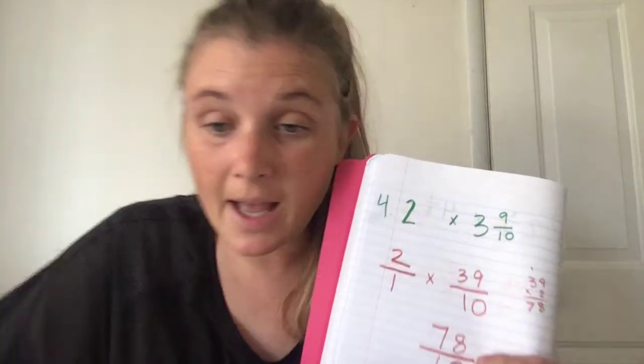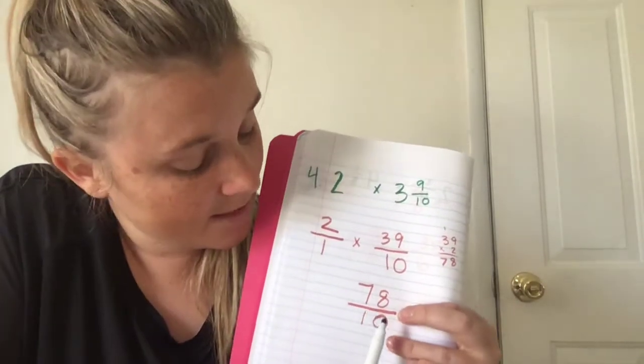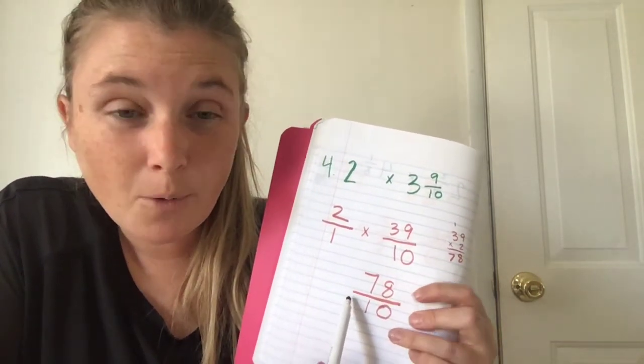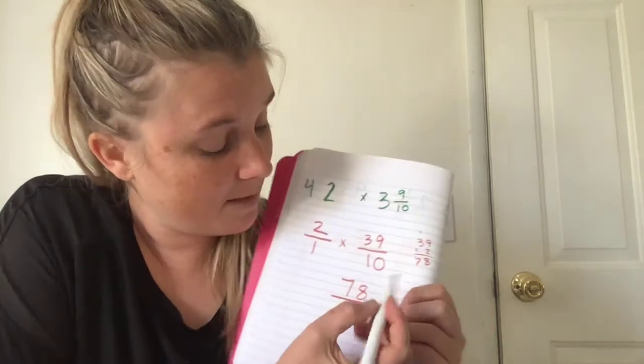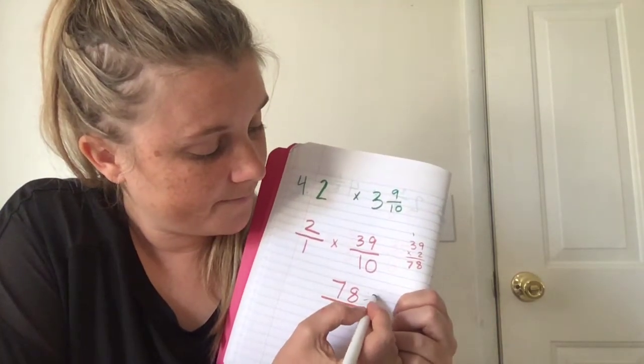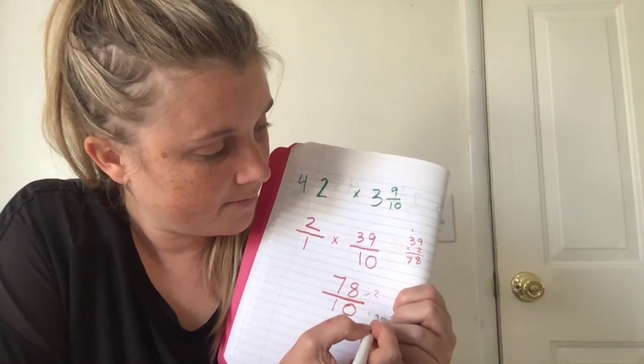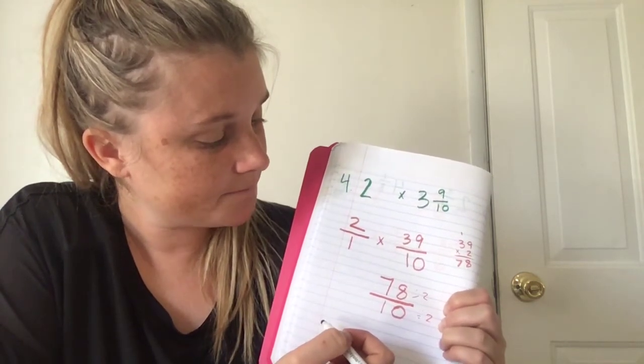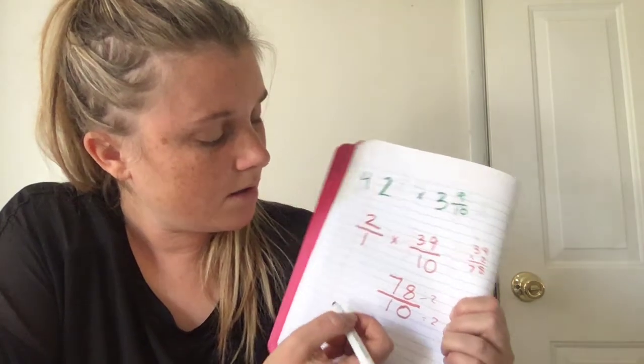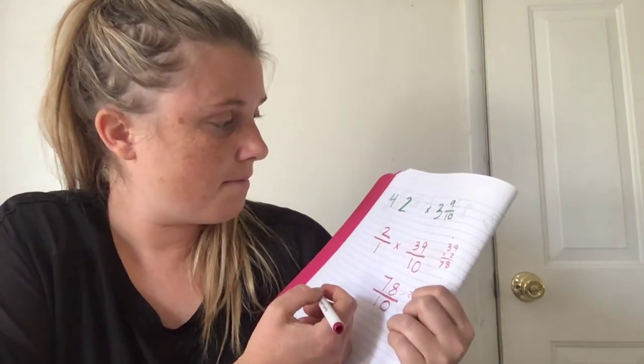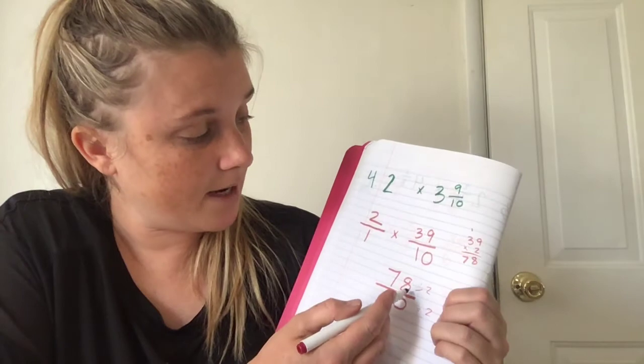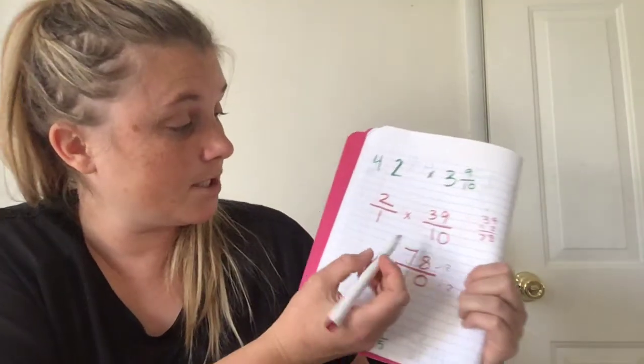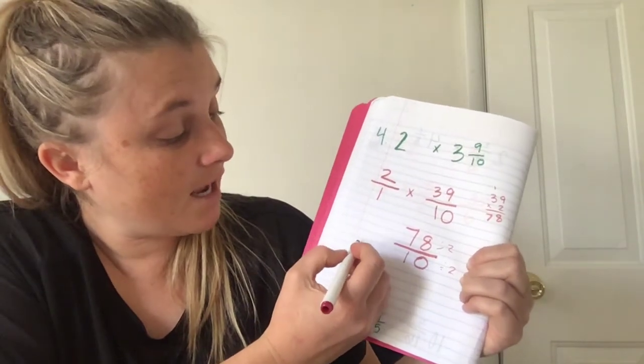Simplify it. But first, before we do that, can we simplify this at all? Is there anything that we can divide both of these by? They're both even. So let's divide them by two. Okay, so seventy-eight divided by two is what? We just timesed it by two, is thirty-nine.